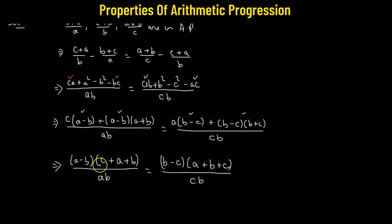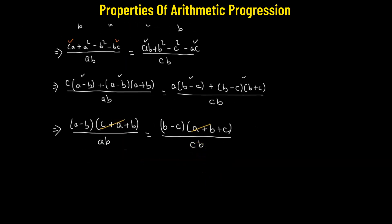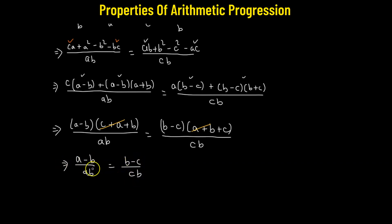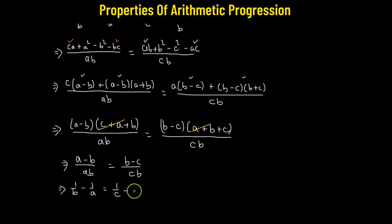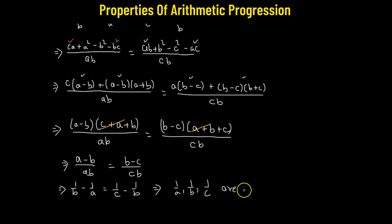Now what we can do, we can cross out (c+a+b), which is common to both the left-hand side and the right-hand side. This leaves us with (a−b) divided by ab, which equals (b−c) divided by cb. Dividing each term in the numerator by the denominator, this gives us 1/b − 1/a = 1/c − 1/b. And this simply tells us that 1/a, 1/b, and 1/c, these three terms are in arithmetic progression.